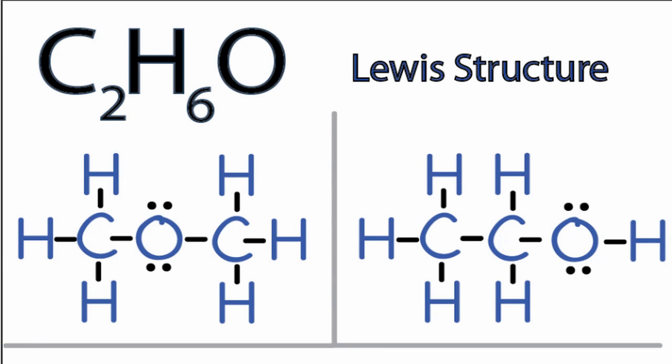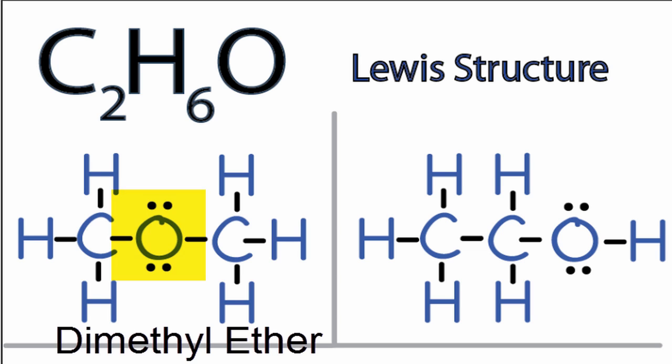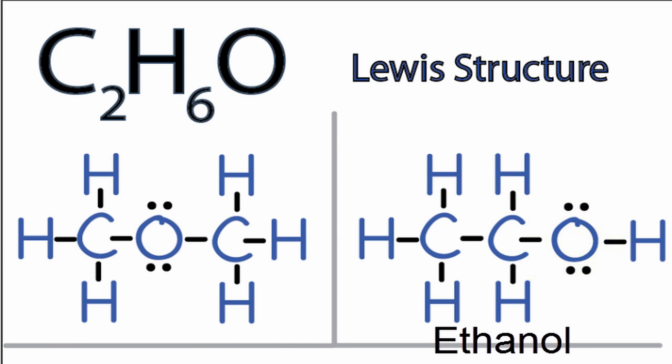There are two ways presented here to draw the C2H6O Lewis structure. On the left we have the oxygen atom between the two carbons — this is called dimethyl ether. On the right, the oxygen atom is on the outside with the hydrogen attached to it. That's called ethanol.